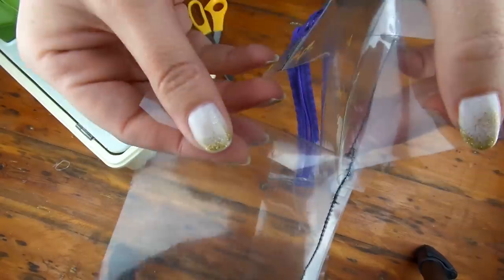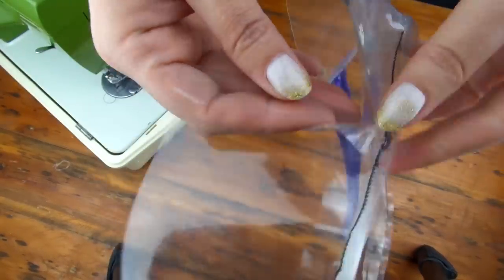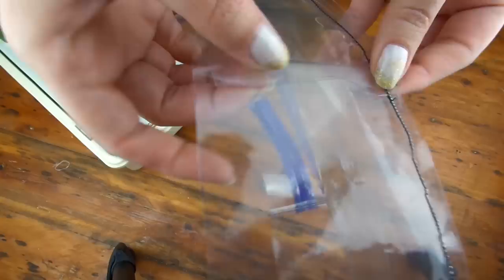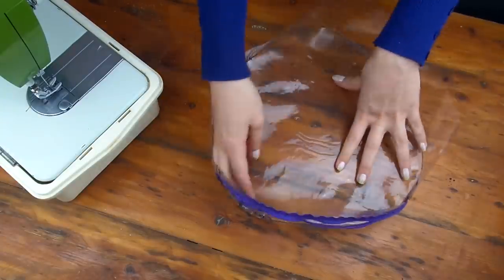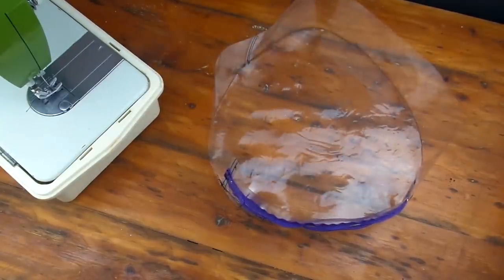When you reach the part where the two ends need to be joined, fold the one backwards, let the other one cover it and sew them in place. And now you have something that looks like a baby's plastic water pool.